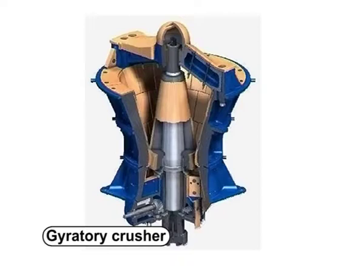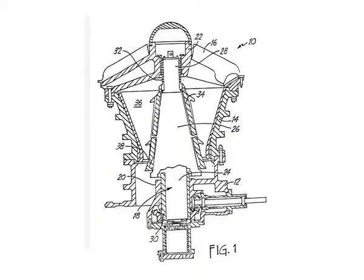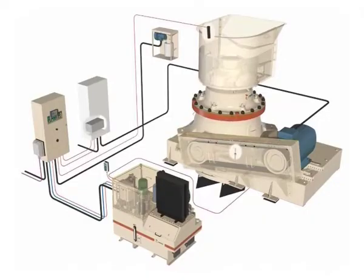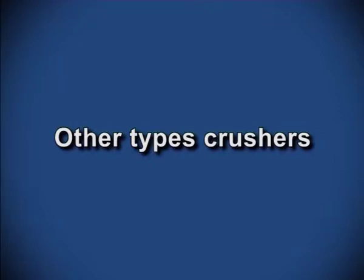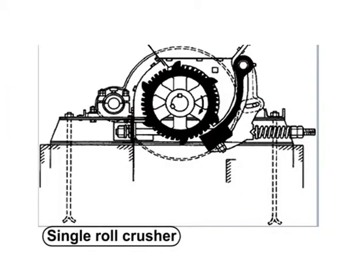The next is a gyratory crusher. By virtue of the shape of the holding chamber and crushing head, as seen from the figure, a V-shaped crushing zone exists in one location or another throughout the grinding period. The gyration frequency is about 400 per minute, giving a very high capacity of about 4500 tons per hour. Being a crusher, the major force is compression. It consumes much less power and has lower maintenance compared to the jaw crusher. Other types of crushers include smooth roll crusher and single roll crusher.